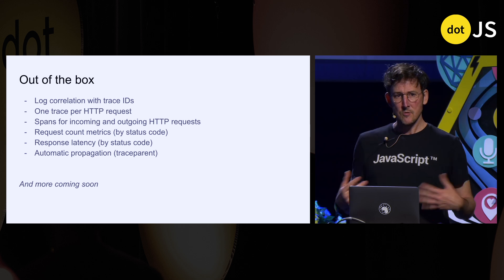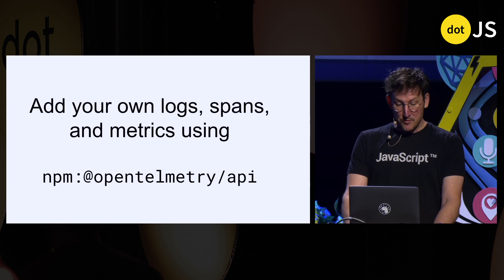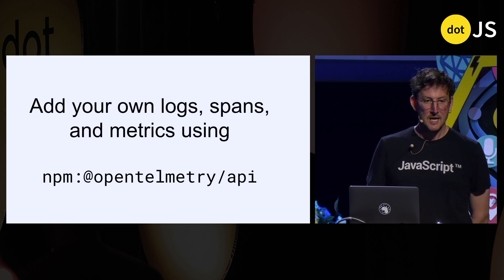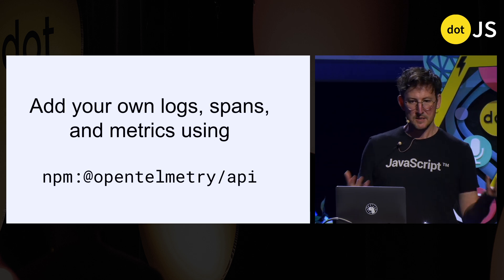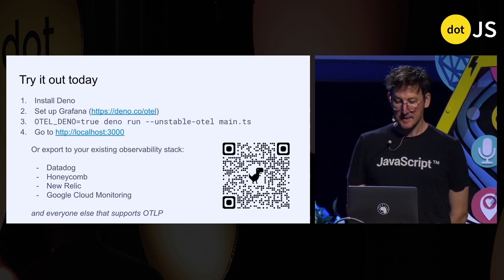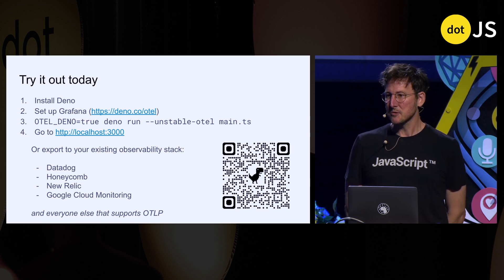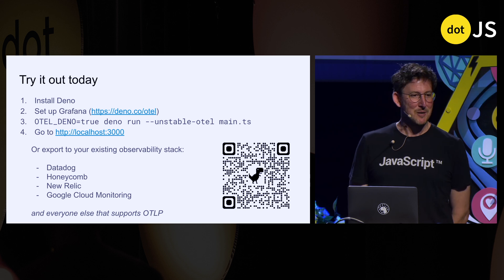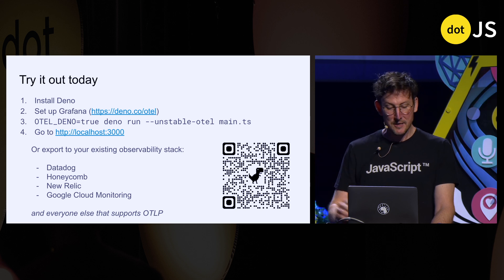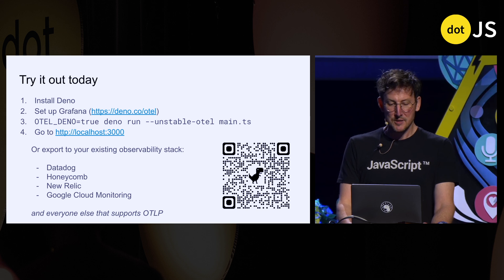When you run in Dino you will get all sorts of instrumentation for free. Of course you can add your own spans and metrics using the OpenTelemetry API on npm, and these two things play well together. There's a QR code to the documentation — basically just run your app in Dino, add a couple of flags, and export your OTel data to wherever you want — Grafana, Datadog, or whatever system you're using — and you should be able to see interesting information about your JavaScript server.